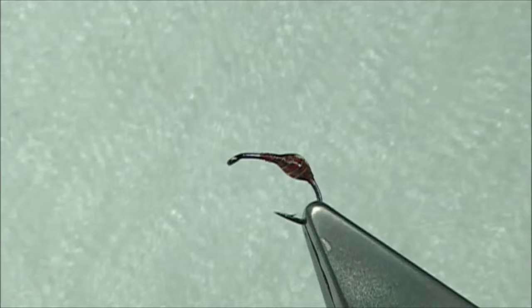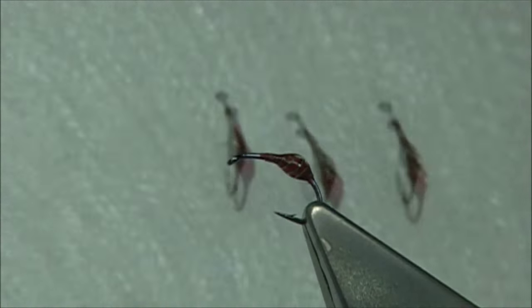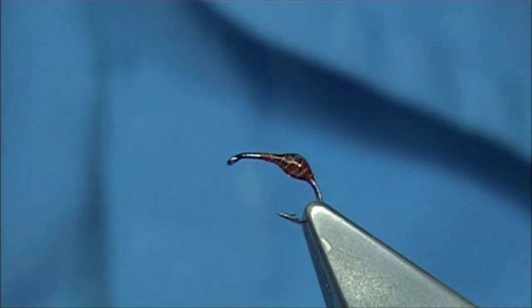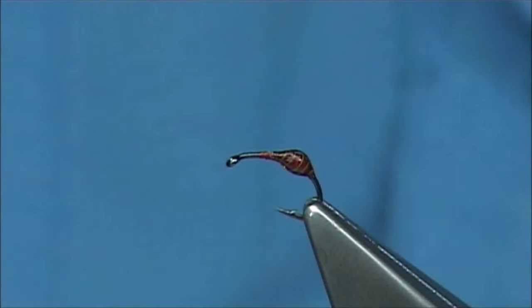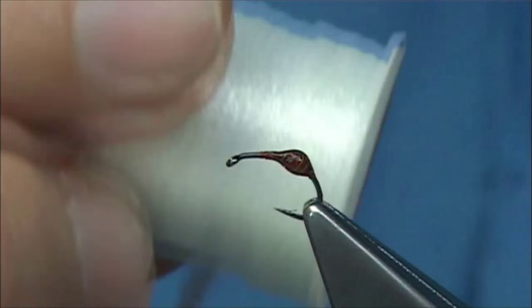Now once the bodies are dry, I've got three or four tied, we can start putting on the parachute hackles and the wing. Now the wing, you can see, you can use many posts or many fibers to help support the hackle. I'm just going to use a white antron, this is a yarn, multi yarn, this one here number 16.